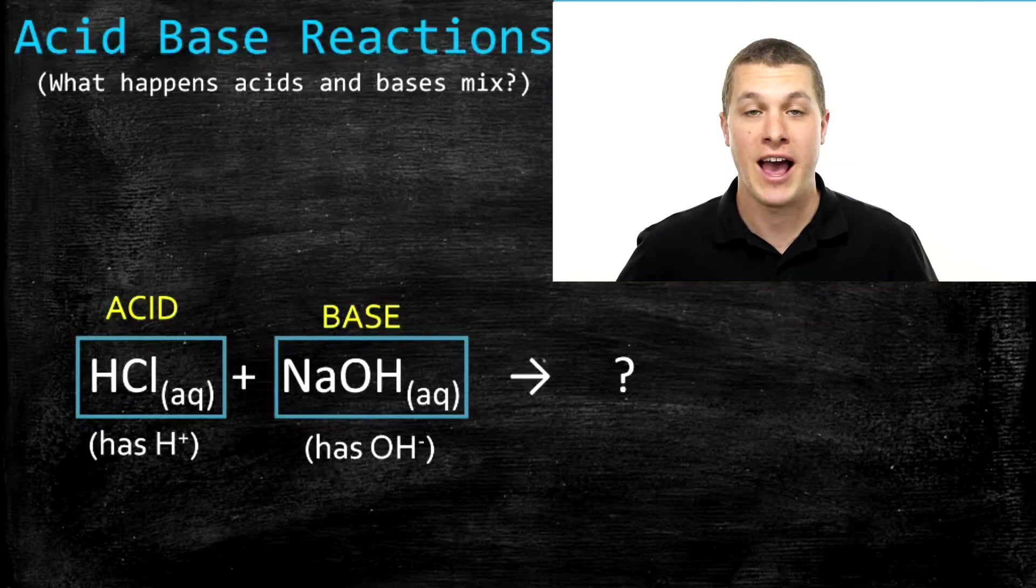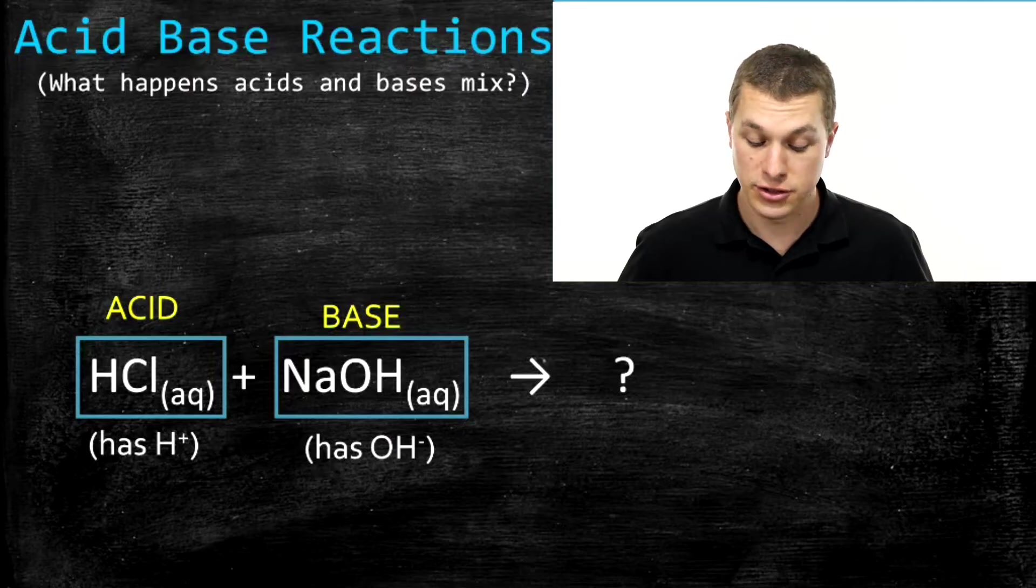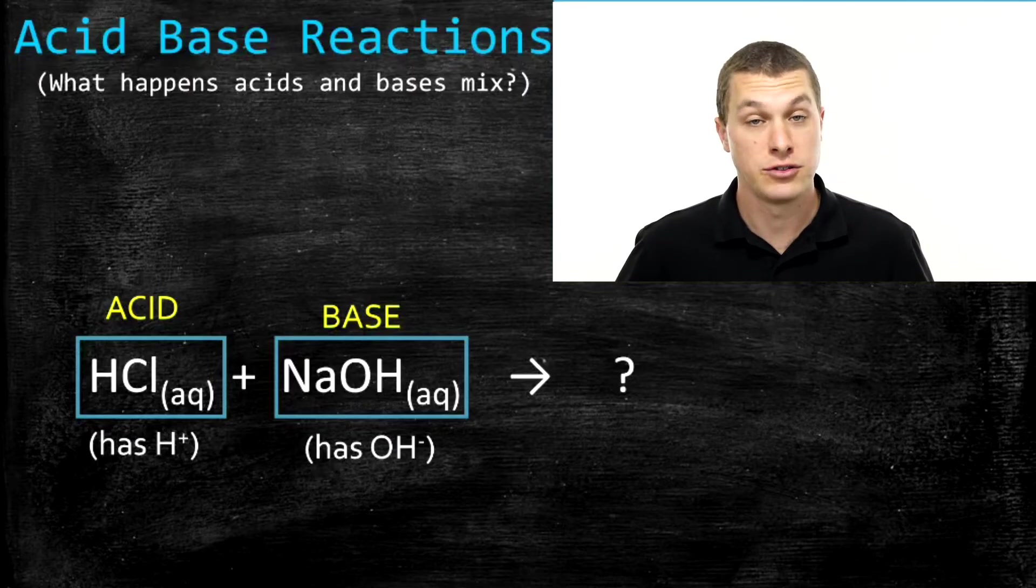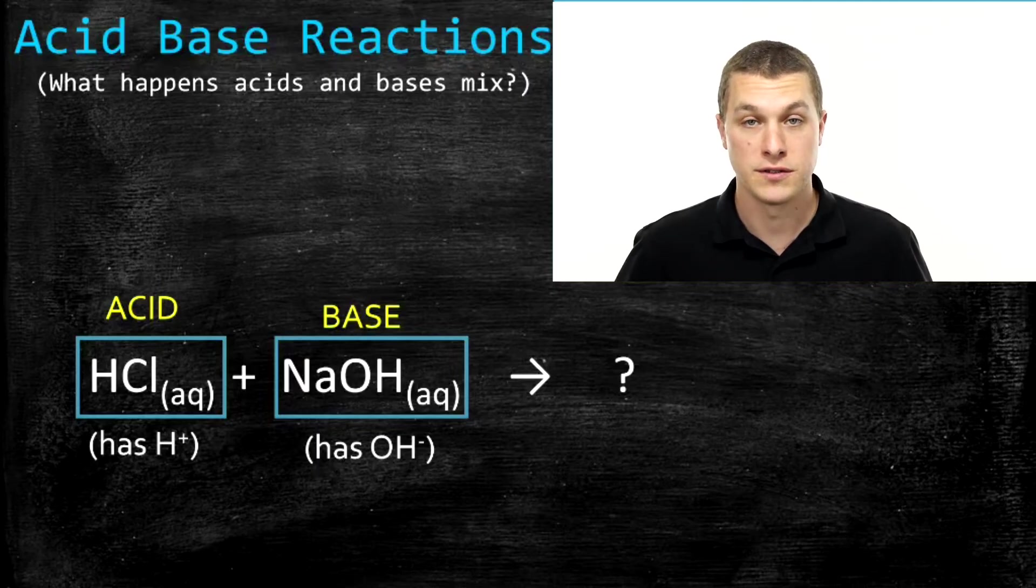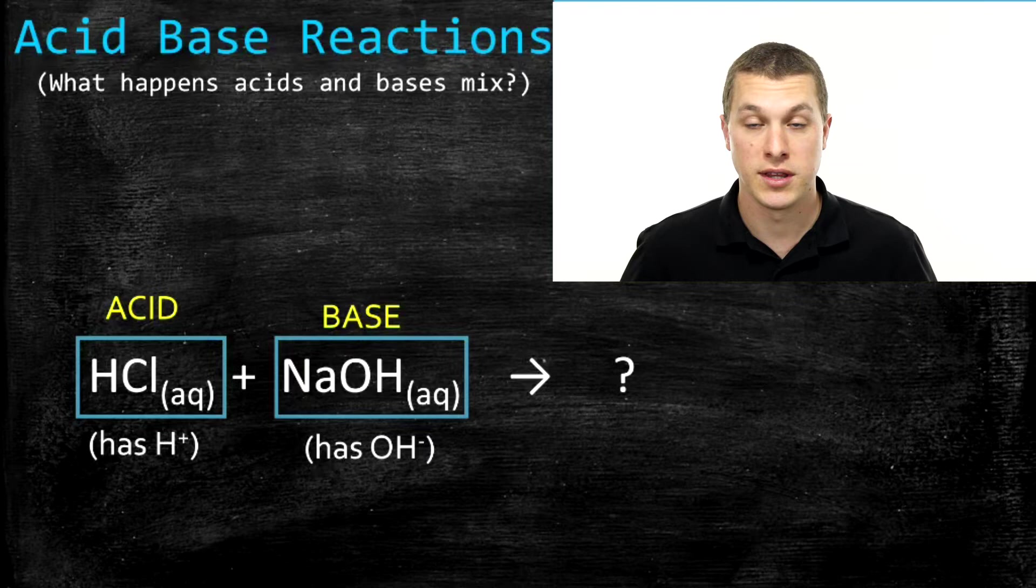Welcome to Real Chemistry. Today we're going to talk about acids reacting with bases. An acid, recall, is anything that gives up hydrogen ions into solution when it's put into water, just like this hydrochloric acid does down below. A base is anything that gives off hydroxide ions into water when it's dissolved, just like this sodium hydroxide down here. It turns out something pretty special happens when you mix hydroxide with those hydrogen ions, and we're going to talk about what that is.